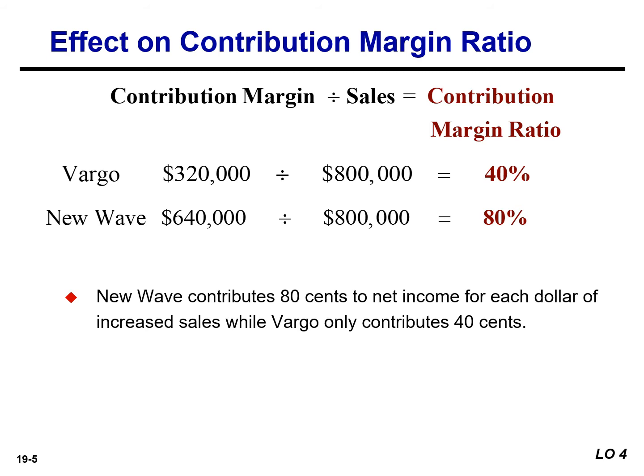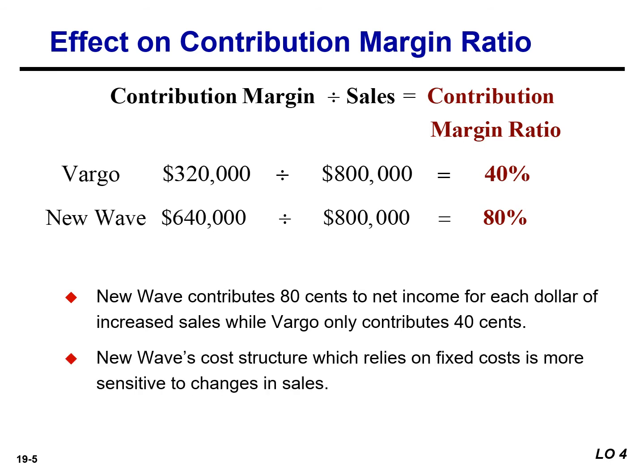It also means that for every dollar that sales decline, New Wave loses 80 cents in net income, whereas Vargo will only lose 40 cents. New Wave's cost structure, which relies more heavily on fixed cost, makes it more sensitive to changes in sales revenue.